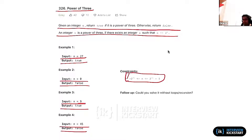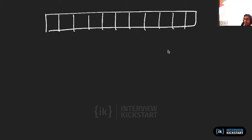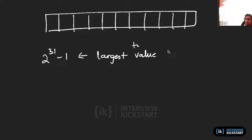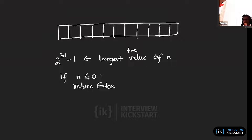The solution to this is actually quite dissatisfying. Due to the fact that we are only talking about 32-bit integers, we know that the largest value n can have is 2 to the power 31 minus 1. So clearly, if n is less than or equal to 0, we can straight away return false — just like the earlier problems.